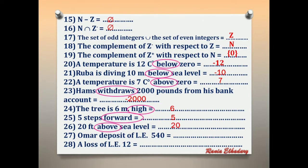Number 27: Omar deposits 540 pounds. We have the word 'deposit,' which is positive. So the answer is positive 540 pounds.